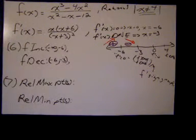Even though the function is still increasing through x equals 4, we must break our intervals at that point because f does not exist there. So: f is increasing on negative infinity to negative 6, from 0 to 4, and from 4 to positive infinity. F is decreasing on negative 6 to negative 3 and from negative 3 to 0.